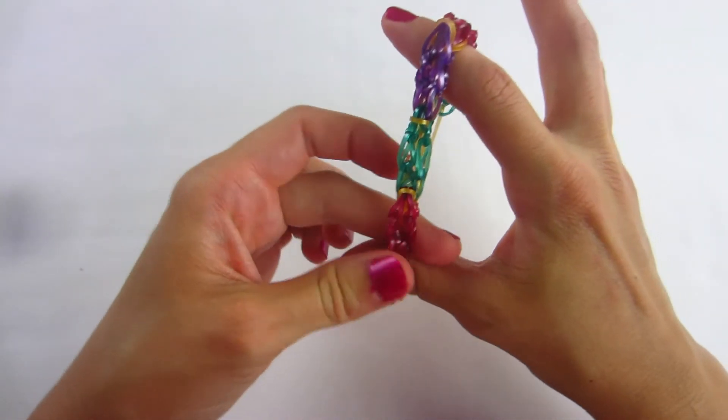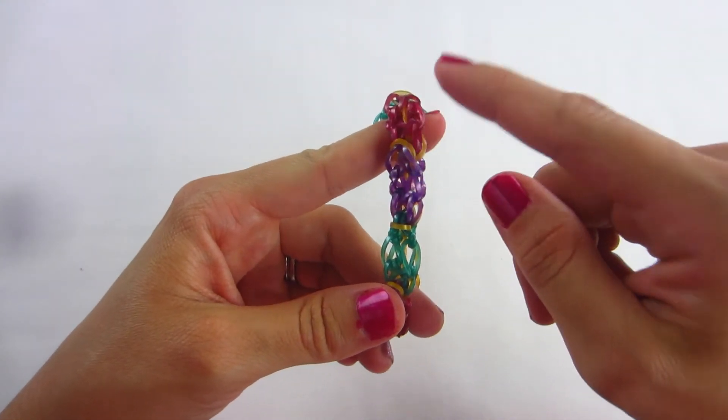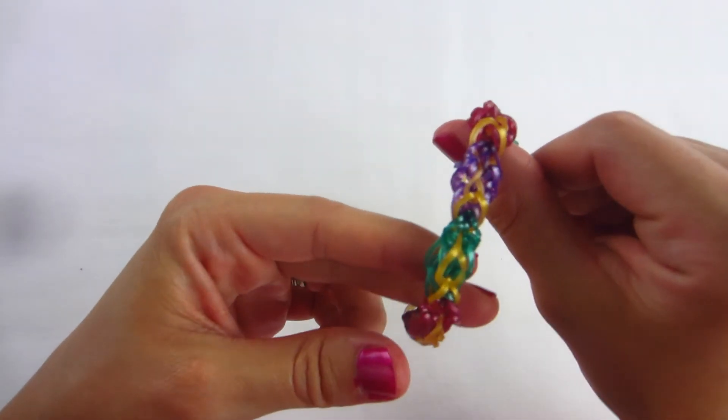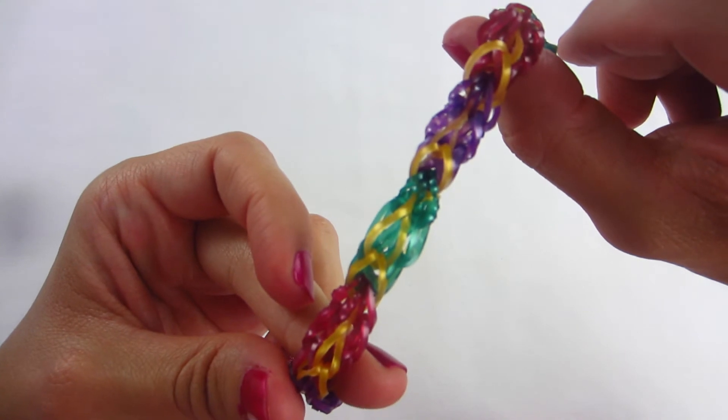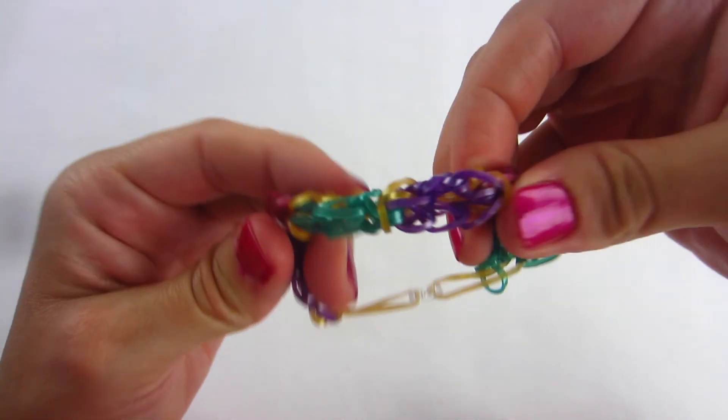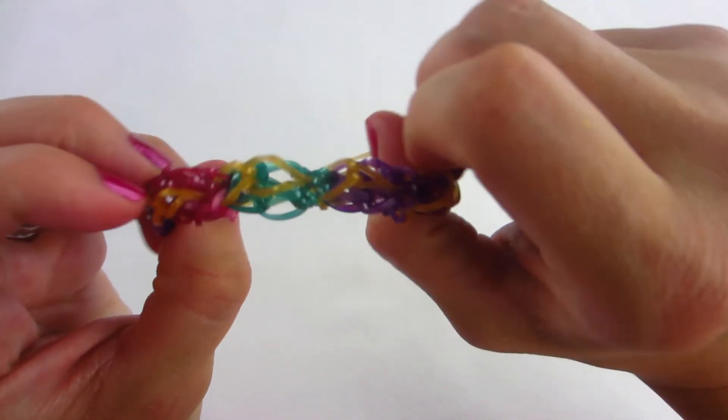And I like this design because you can actually wear it either way. You can wear it this way, where there's only one single gold band in between each color. Or if you like the gold, you can make it more of the centerpiece of the bracelet and have that in the middle of each of your colors. So either way that you like it, you can even wear it both ways and have two different bracelets in one, which is pretty cool.